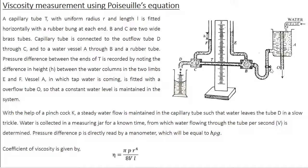With the help of a pinch cock K, a steady water flow is maintained in the capillary tube, such that water leaves the tube D in a slow trickle. Water leaving D is collected in a measuring jar for a fixed time, from which water flowing through the tube per second, this is capital V, is determined.